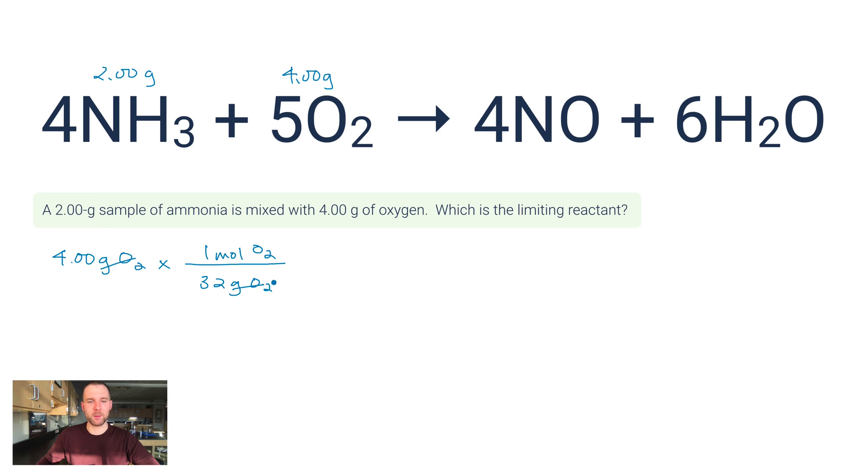I've cancelled out grams of O2. My next stop, if you remember from the mass-to-mass stoichiometry video, is a molar ratio. On the bottom, I want to look for the coefficient in front of O2. It's 5, so that means 5 moles of O2 reacts with 4 moles of NH3. There's my molar ratio.